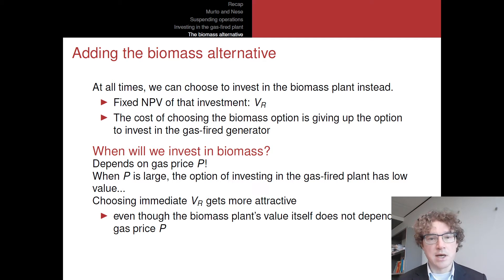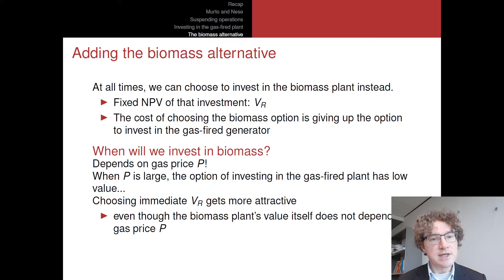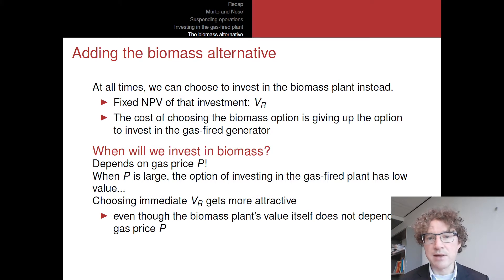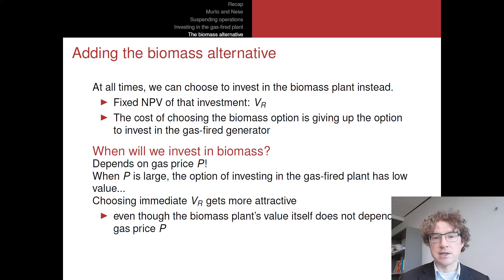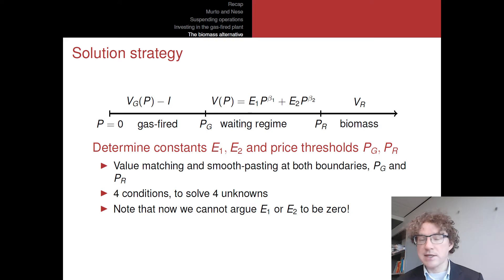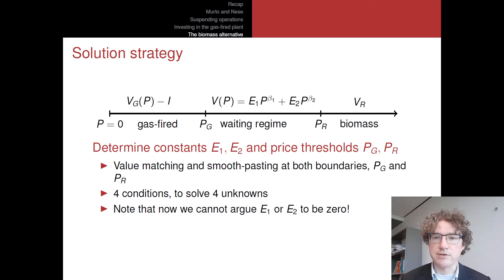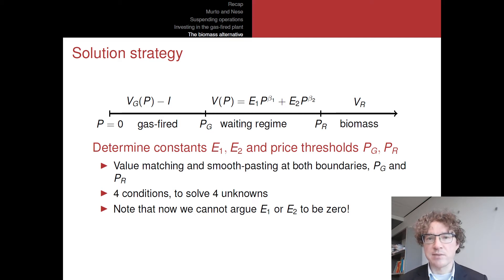We have to identify the various regimes and make sure that we solve the equations in these various regimes. When P is really large, the option value of investing in this gas-fired plant is really low. So the opportunity cost of giving up this option to invest is not that big, and VR — getting VR immediately by investing in the biomass plant today — becomes more and more attractive. But when P is smaller, there is value in waiting. If the cost of gas is really large, we don't really foresee any possibility to at any point invest in this gas-fired plant, so going directly towards VR to make the biomass investment will be the best thing.